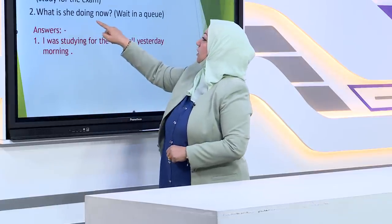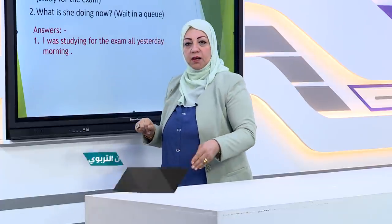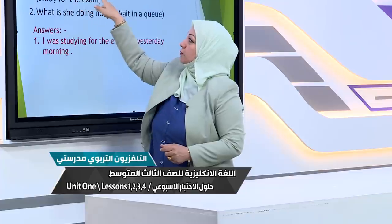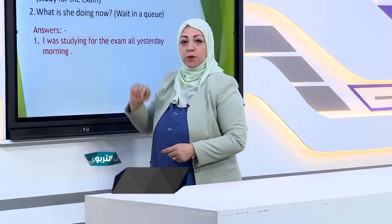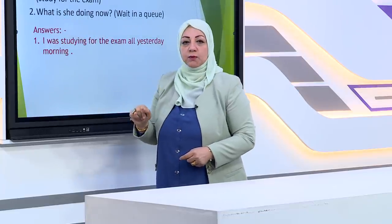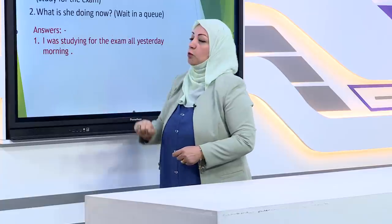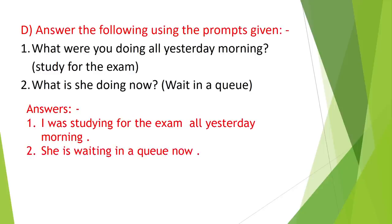Now the second sentence: what is she doing now? We have the prompt 'wait in a queue.' Notice the difference from the first sentence — the first was past continuous with 'were' and verb with -ing, while here we have present continuous: 'is' plus verb with -ing, and the time marker 'now.' Remove 'what,' put the subject before the auxiliary: 'she is.' Replace 'doing' with the verb from brackets plus -ing: 'waiting.' So: she is waiting in a queue.